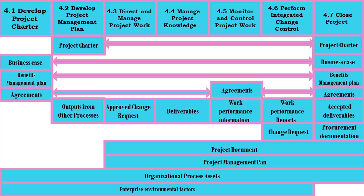Organizational Process Assets that can influence Direct and Manage Project Work include organizational standard policies, processes, and procedures; issue and defect management procedures; issue and defect management database; performance measurement database; change control and risk procedures; and project information from previous projects such as baselines, calendars, project network diagrams, risk registers, risk reports, and lessons learned repository.